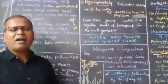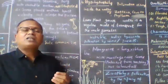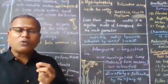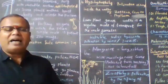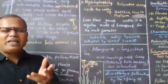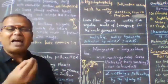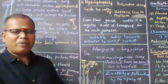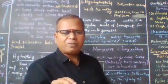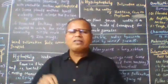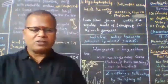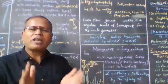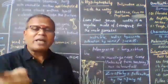We studied the Hydrilla plant earlier in a test tube experiment to demonstrate that oxygen is evolved during photosynthesis. That experiment using the Hydrilla plant is a good reference for understanding this aquatic plant's role.